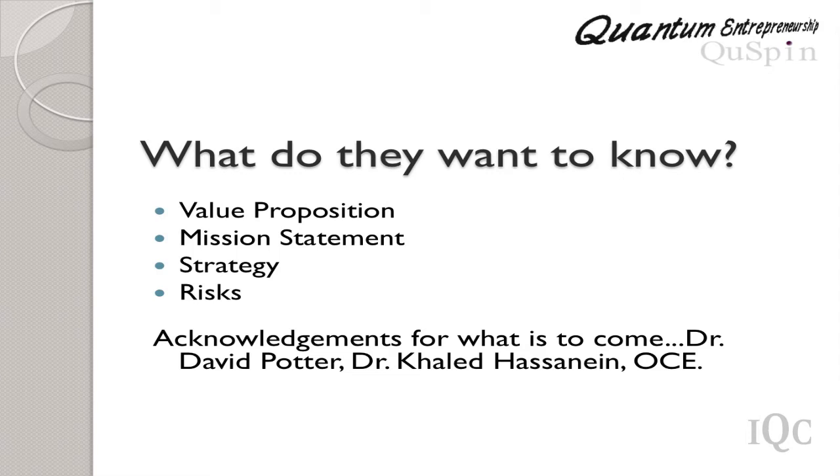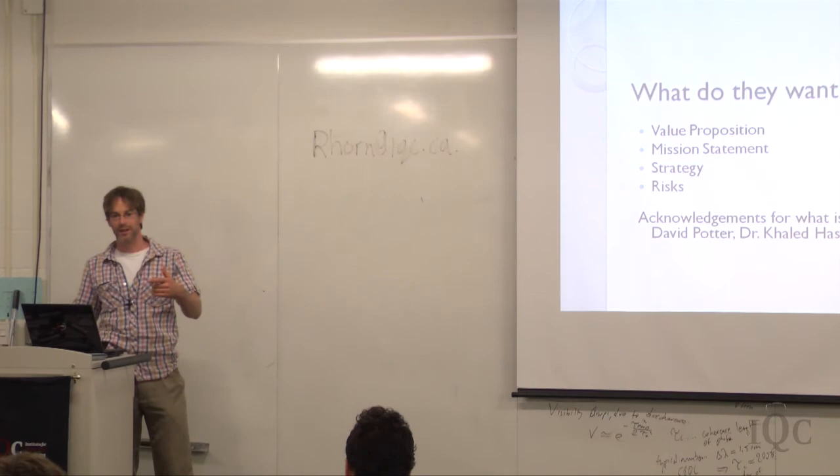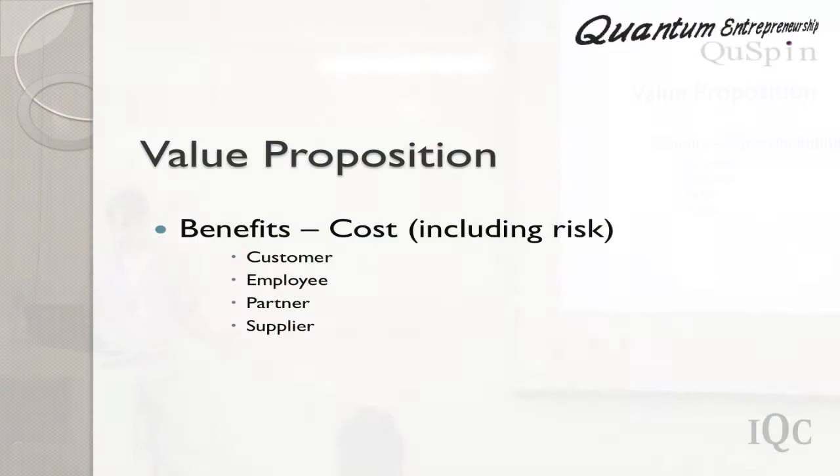What you want to do is look at four basic things when you want to put your idea into context. You have to have what's called a value proposition. You want to have a mission statement. You want to figure out what strategy you might want to pursue with your product or with your idea. And you want to figure out what the risks are. I know that you're going to tune out because you don't have a product, you don't have a mission statement, you don't have a company. But it should always be in the back of your mind when you're putting down a grant application.